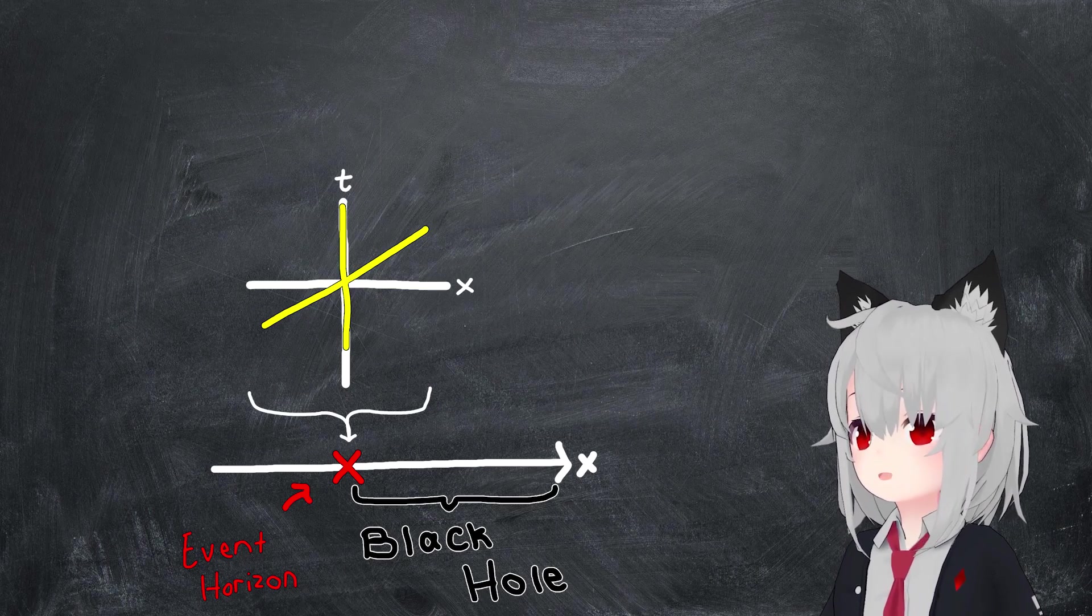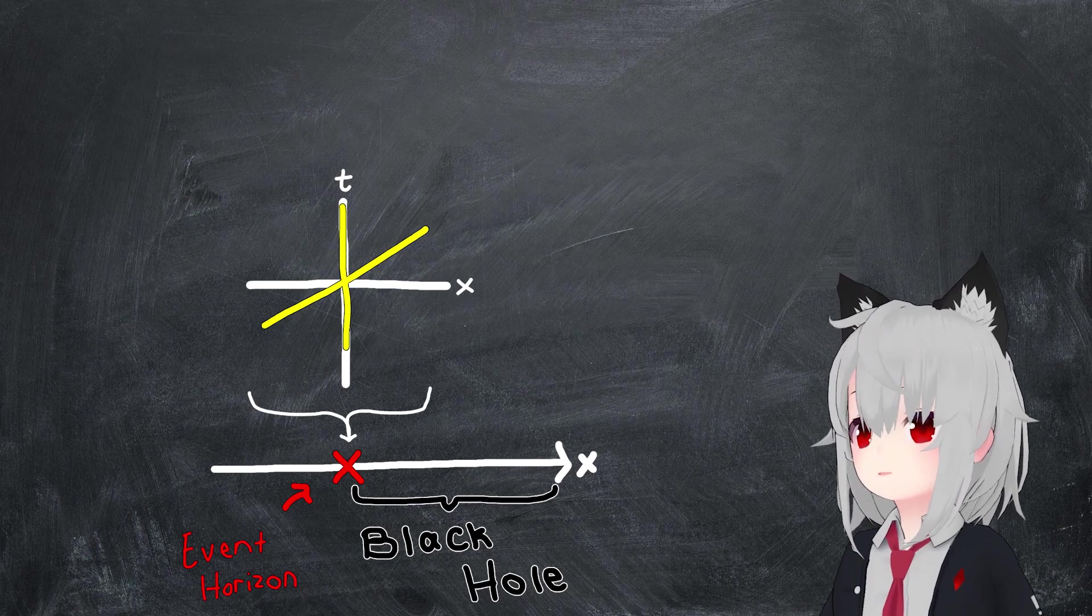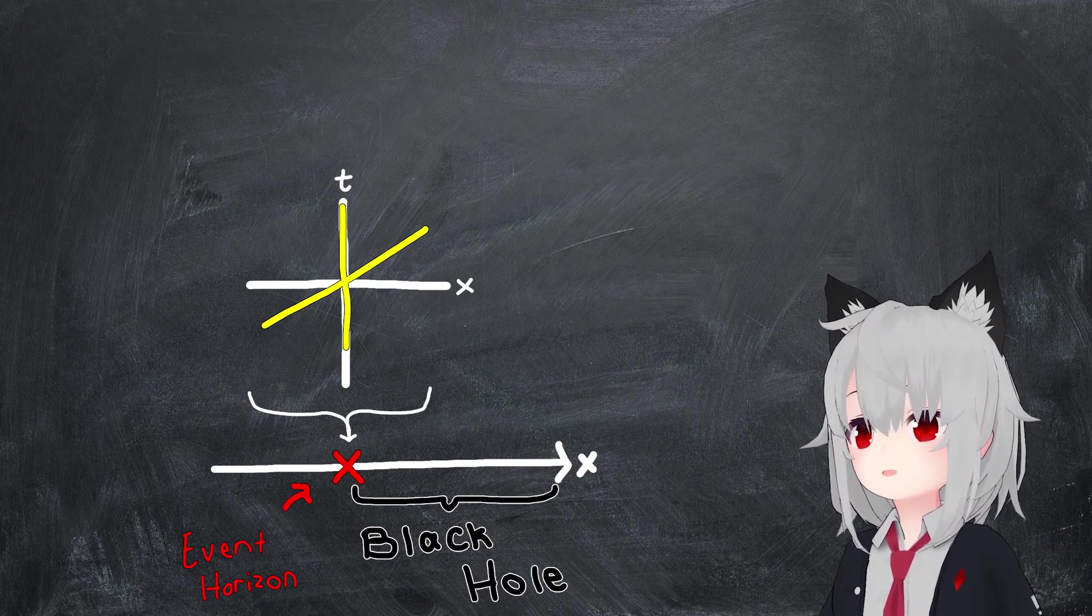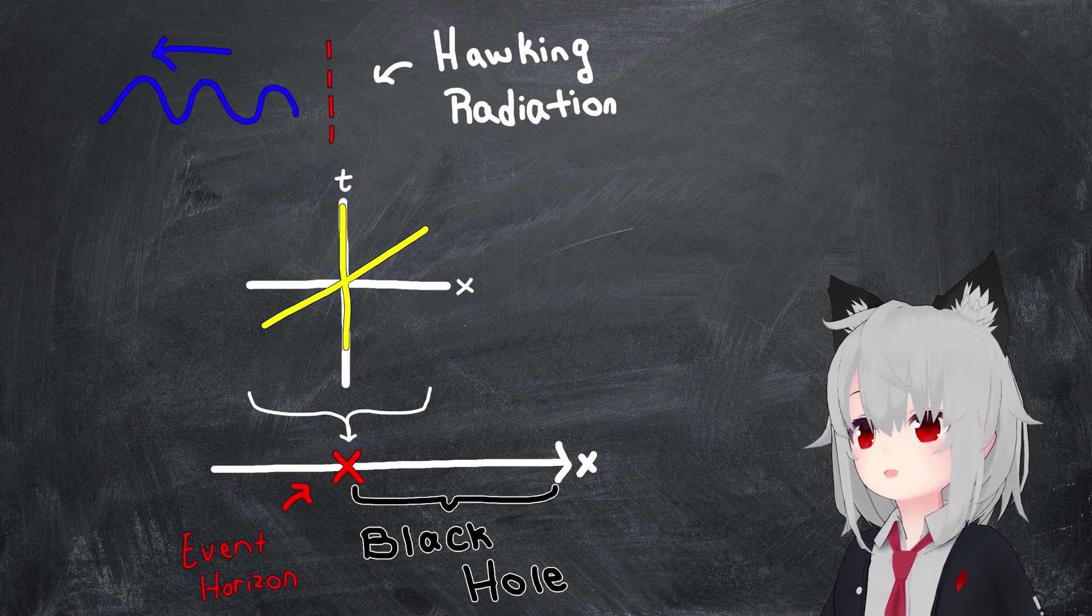In fact, Stephen Hawking showed in the 1970s that, contrary to our expectations, black holes can actually emit particles out of this event horizon, resulting in a form of radiation that's now called Hawking radiation.